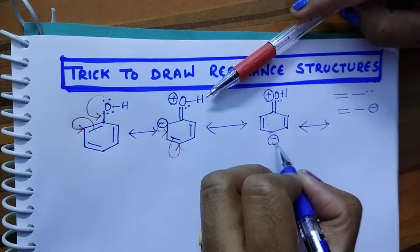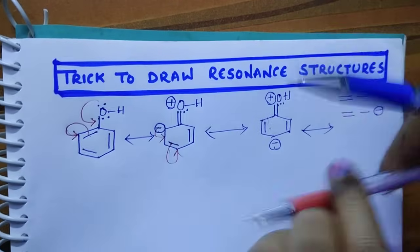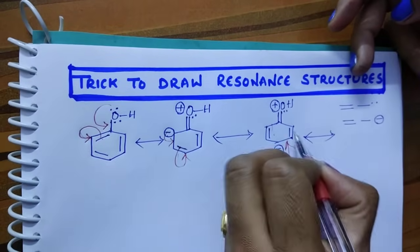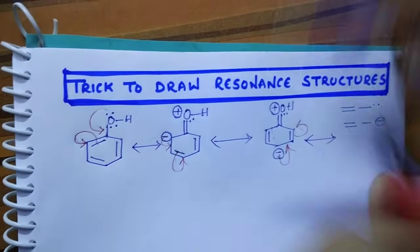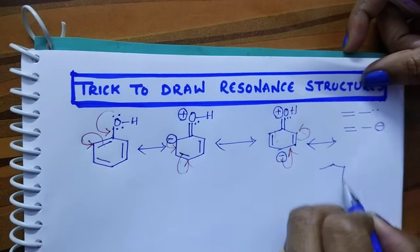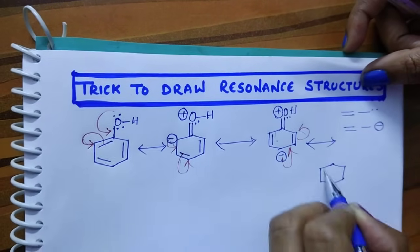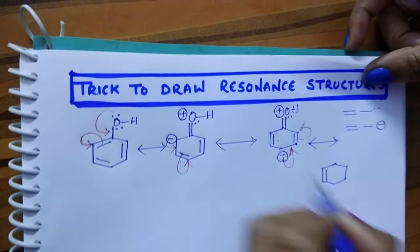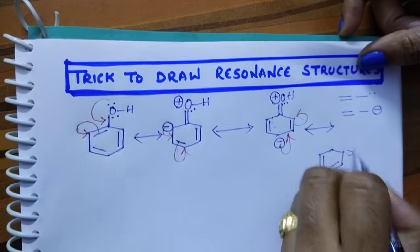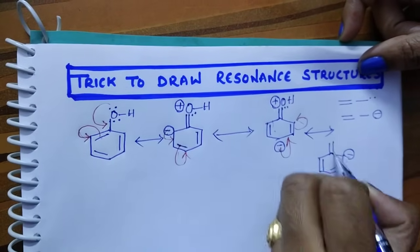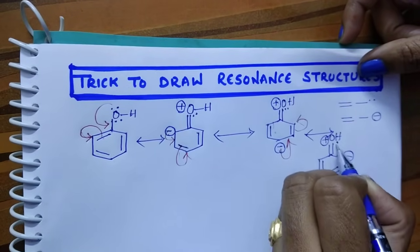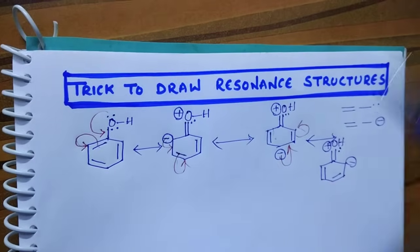Again, this negative charge shifts here, this pi bond shifts. Then we get a bond; when it shifts, a bond; when it shifts, a negative charge and a double bond; oxygen, H, and here a positive charge with a lone pair.